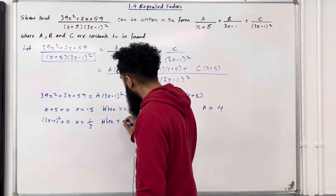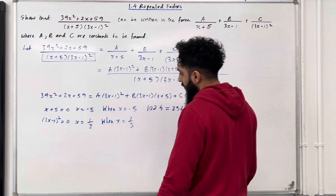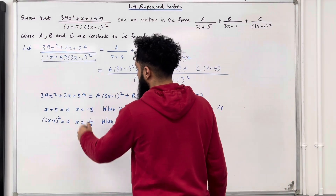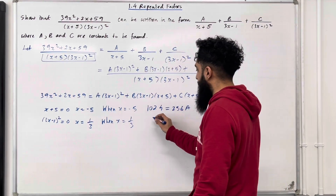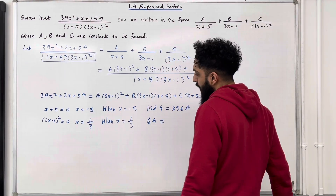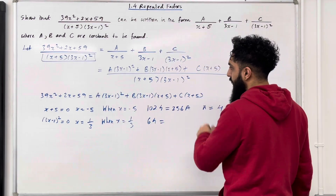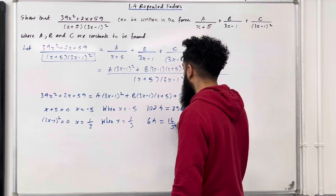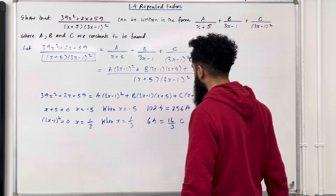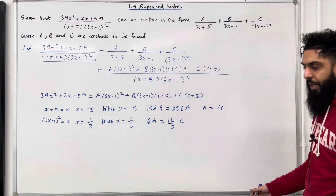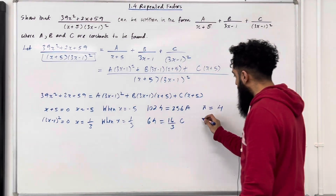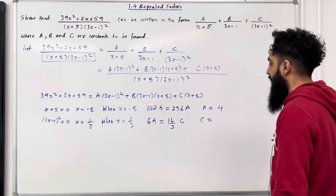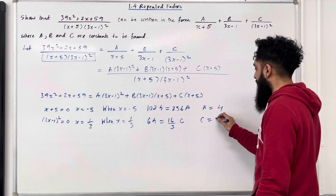When x = 1/3: substituting into the left-hand side gives 64, and substituting into the right-hand side gives (16/3)C. So C = 64 ÷ (16/3), which gives C = 12.